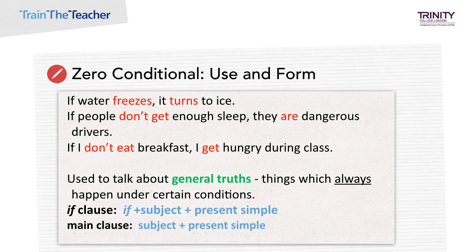The zero conditional is used to express general truths and is for when the time being referred to is now or always. The situation is real and possible, which is why we use, in both clauses, the most immediate tense there is — the present simple. You can usually replace the word 'if' with 'when' without a change of meaning.